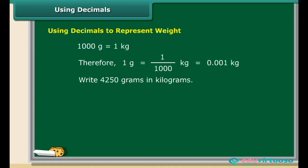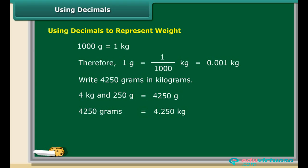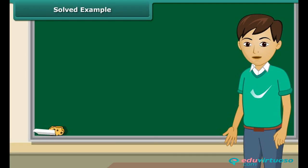Weights can also be represented with the help of decimals. Let us convert 4,250 grams into kilograms. There are 4 kilograms and 250 grams in 4,250 grams. Therefore, 4,250 grams are equal to 4.250 kilograms.